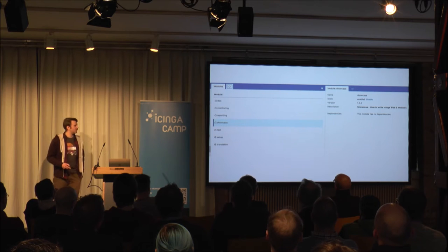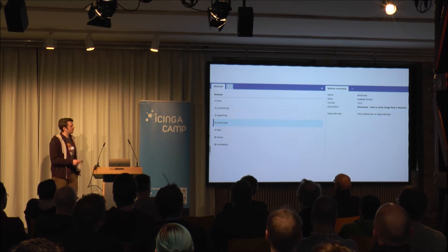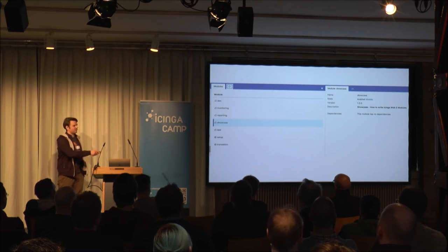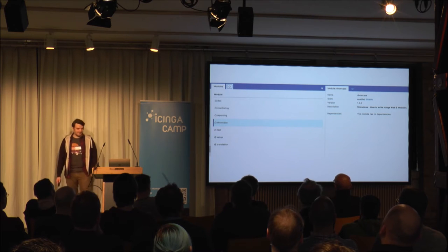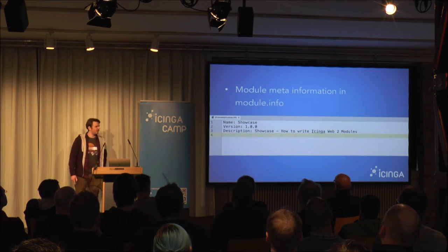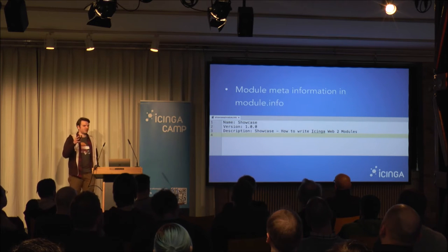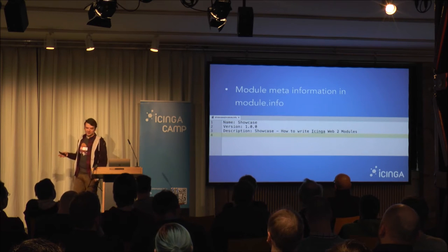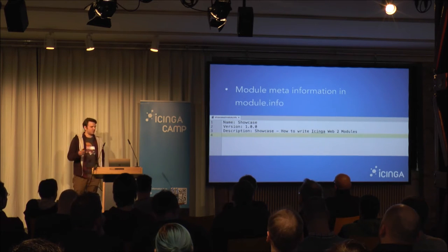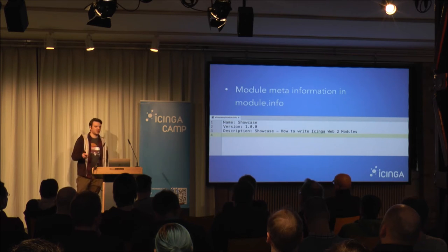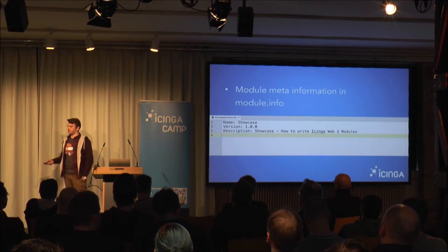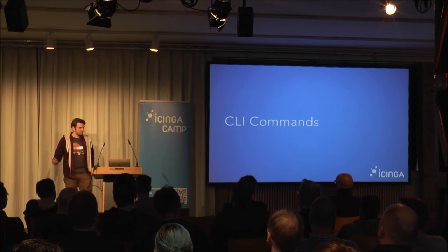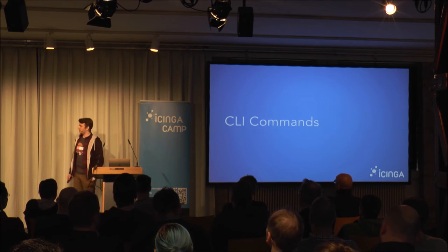You can also do that in the web interface — go to Overview > Modules, find your module — we're using 'showcase' — and enable or disable it right there. We have a file in the base directory of the module called module.info. This is where metadata of the module is kept, for example the name and short description, and this information will be shown in both the web and the CLI.